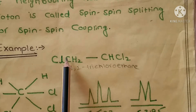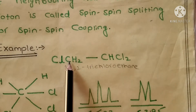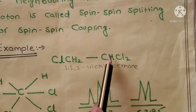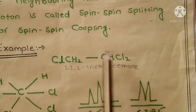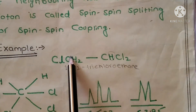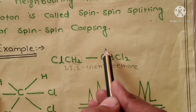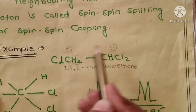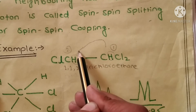In this compound, two sets are present. In one set, two protons are present. And if we look at the other end, the second set contains one proton, and this set has two protons. This one set of protons influences the second set of protons.